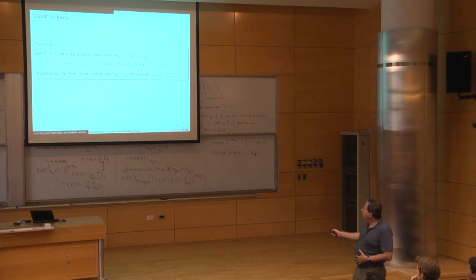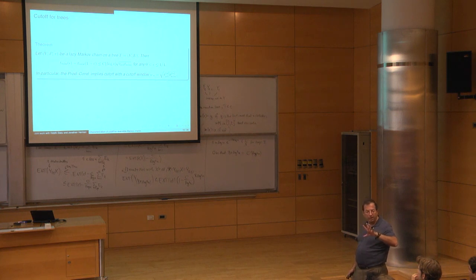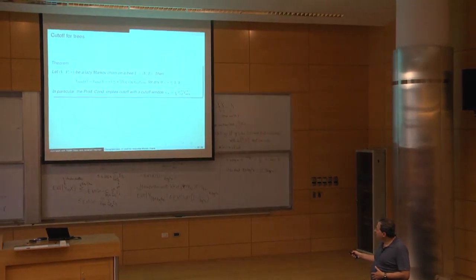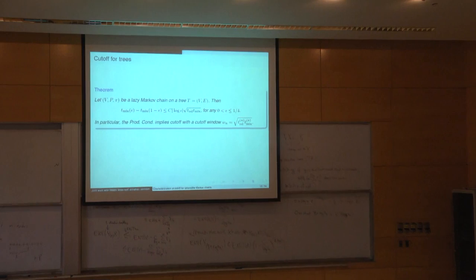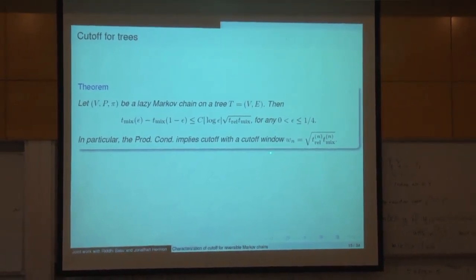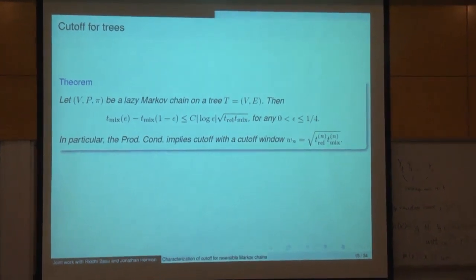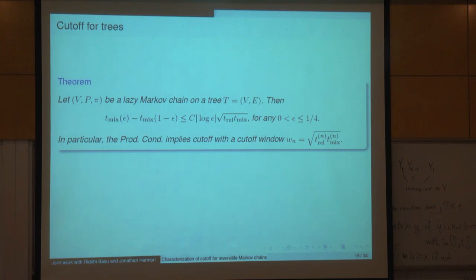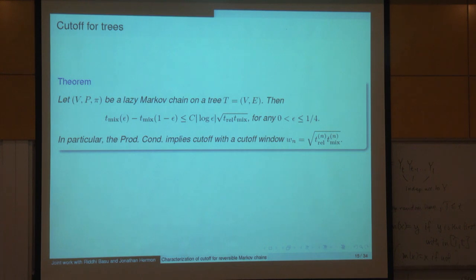What was crucial in the Aldous example is we had very large girth — two different ways to reach target Y which got disconnected early on. If we ensure no large cycles, then the product condition is sharp. Here is one statement for a nearest-neighbor walk on a tree: we have any tree, any weights on the edges, and t_mix(ε) minus t_mix(1−ε) can be bounded by C_ε times the geometric mean of the relaxation time (the inverse gap) and the mixing time.